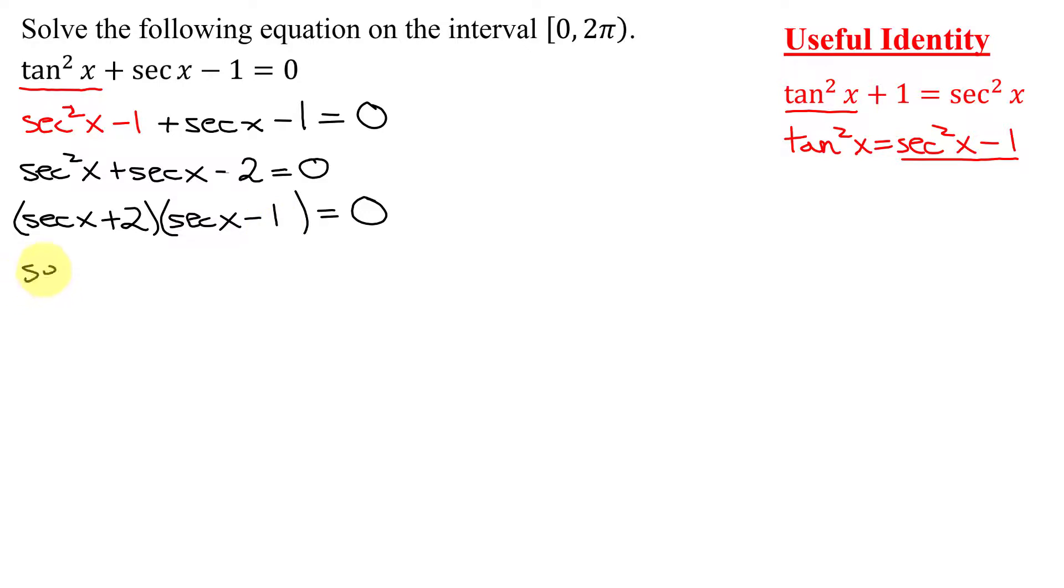So now I've factored it, we set each factor equal to 0: sec x + 2 = 0, and sec x - 1 = 0. From the first one, subtract 2 from both sides, I get sec x = -2.